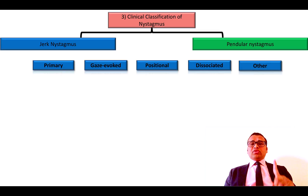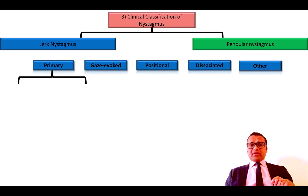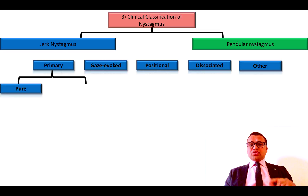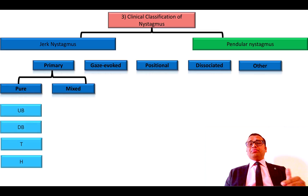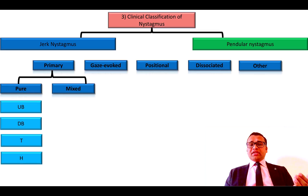Coming to the primary type of jerk nystagmus, it could be either a pure variety or a mixed variety. The pure variety can be upbeating, downbeating, pure torsional, or pure horizontal.